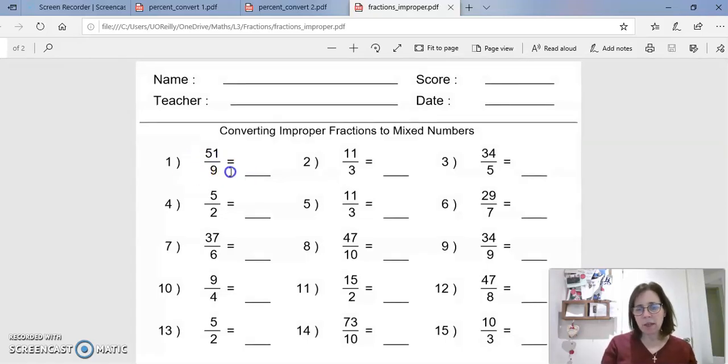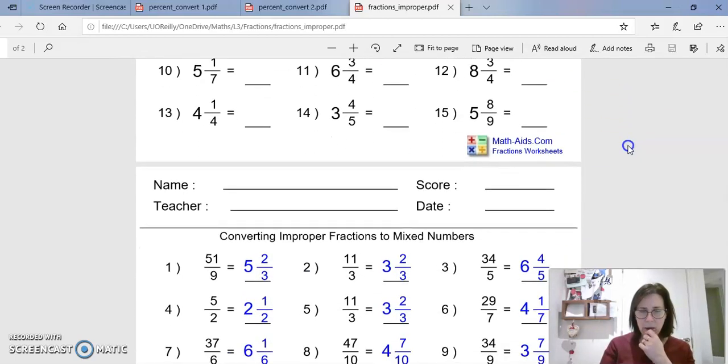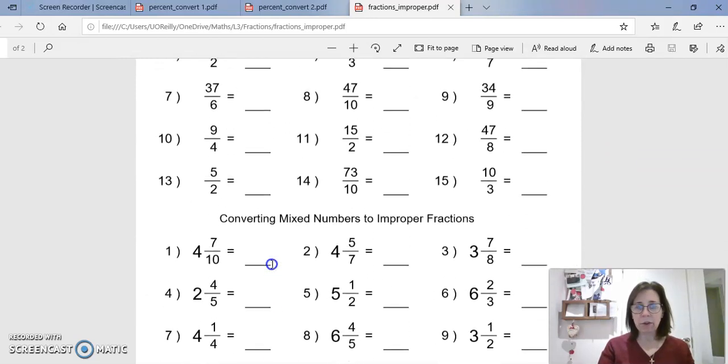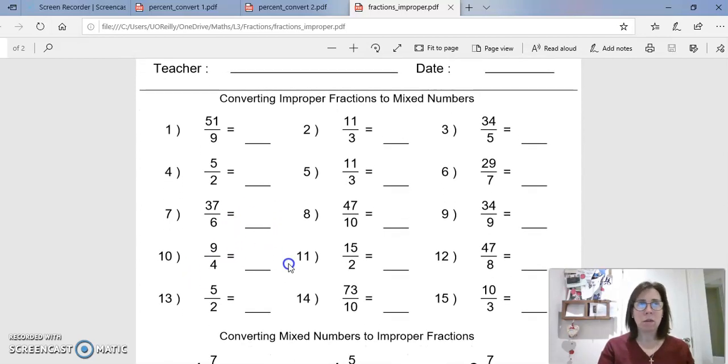So that's what this one looks like. What that's asking you to do is to convert that into a mixed number. So you'll be dividing 51 by 9. You'll get 5 with 6 ninths left over. Six ninths can be simplified to two thirds. So I think the answer to that should be 5 and 2 thirds. That's the top half. That's converting from an improper fraction to a mixed number.